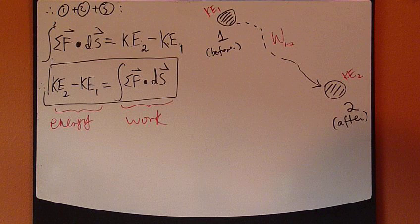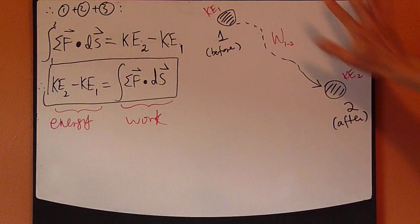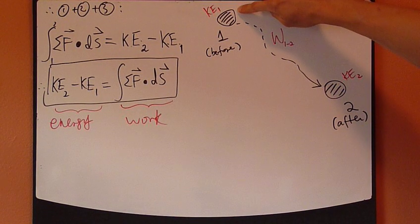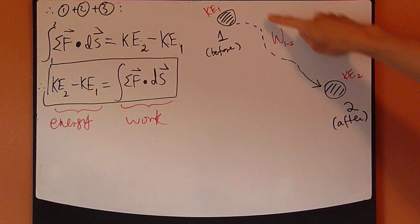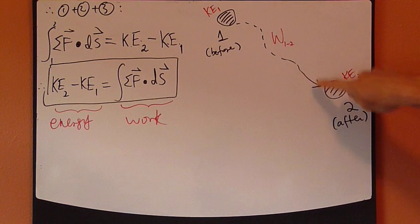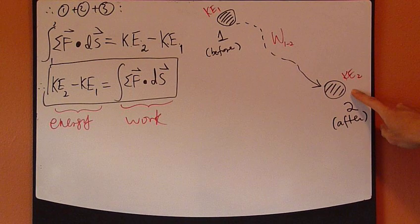So this work energy equation can be explained this way. You have a particle starting from position one, and it follows this route, this path, ends up in position two.